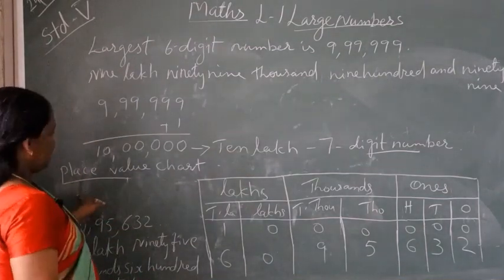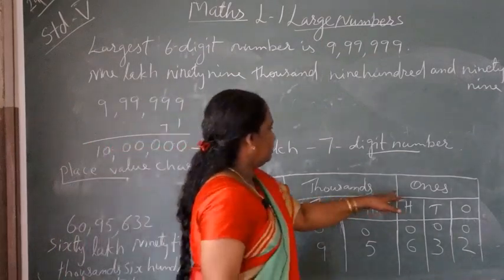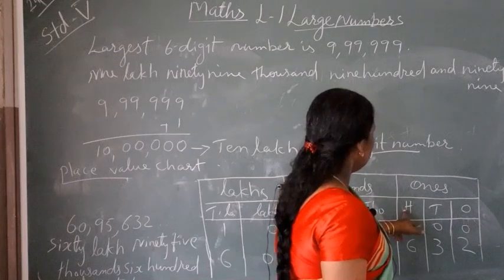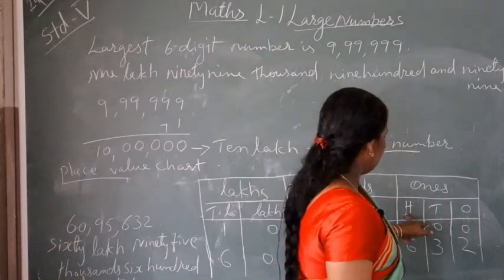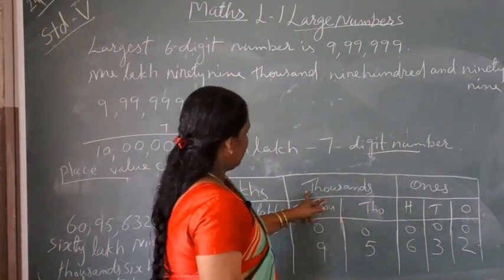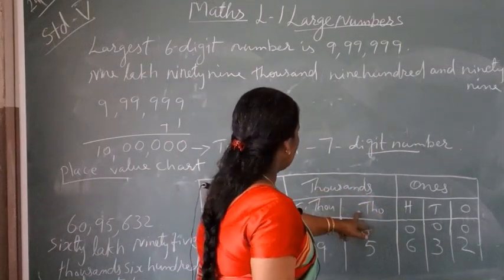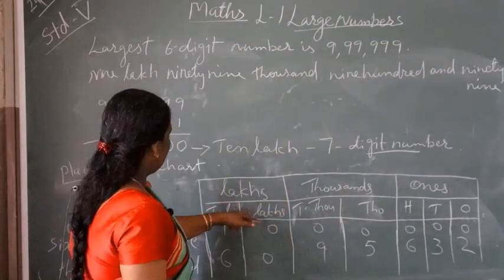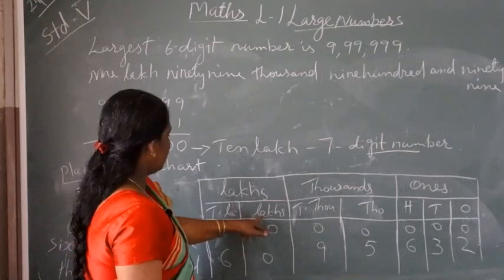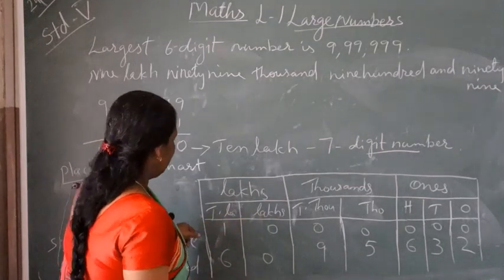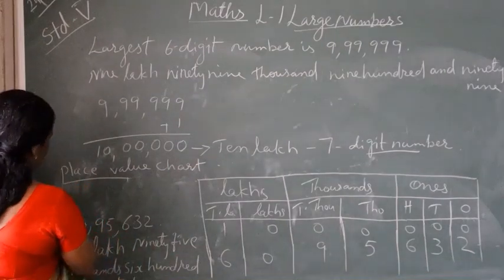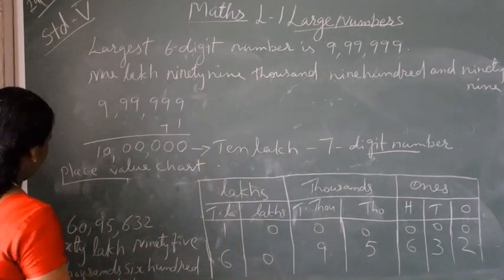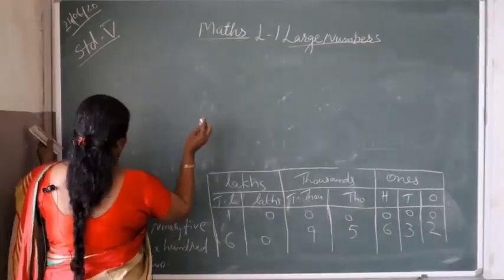Once again, I explain the place value chart. The first period is the ones period, having ones, tens, and hundreds — three places. The next period is the thousands period, consisting of thousands and ten-thousands. After that is the lakhs period, having two places: lakhs and ten-lakhs. For example: sixty lakhs, ninety-five thousand, six hundred and thirty-two.